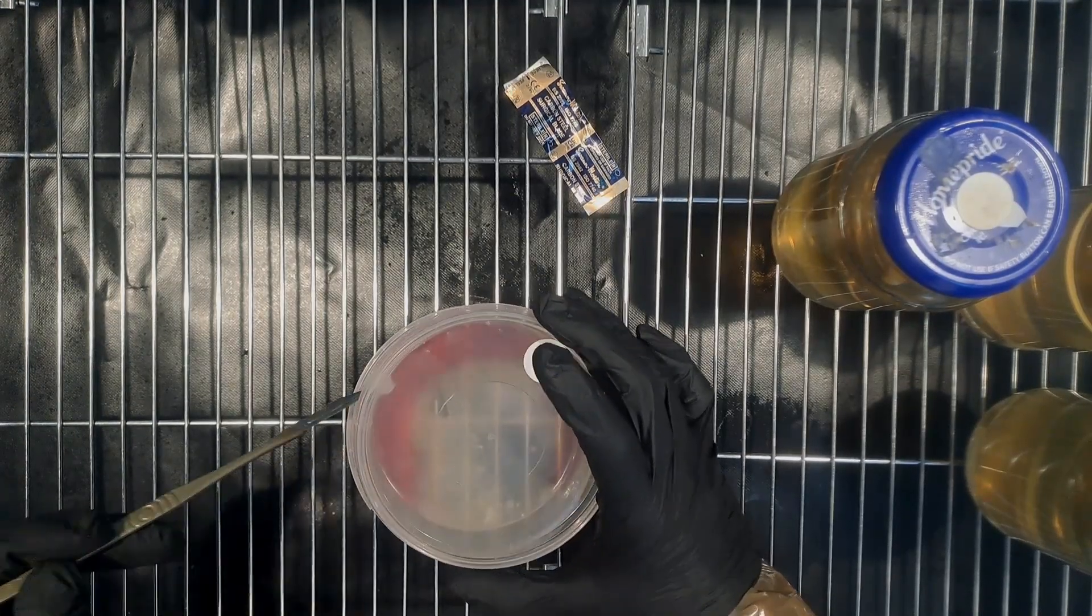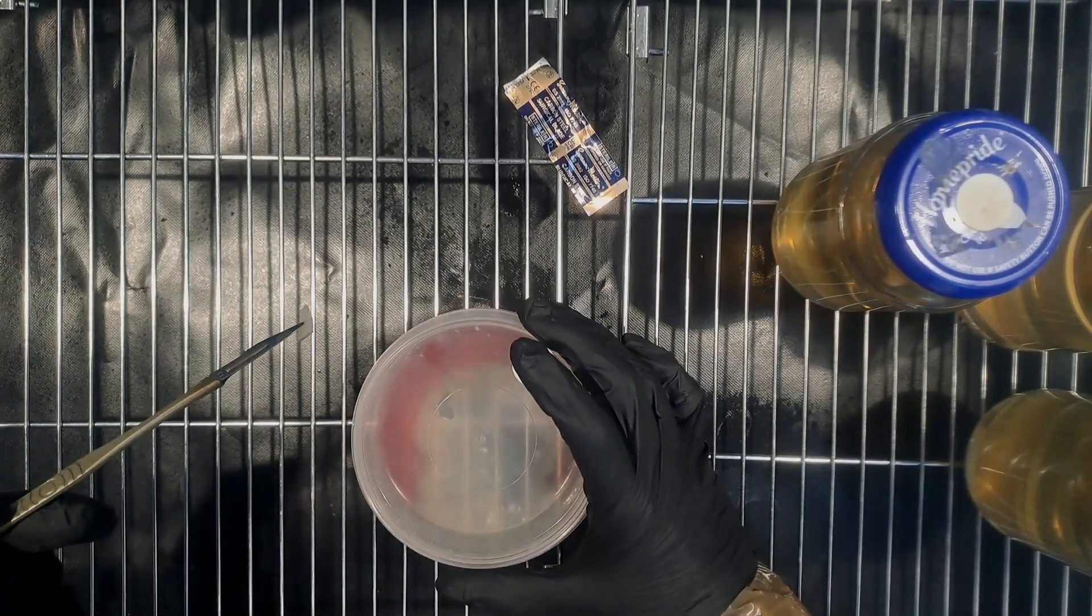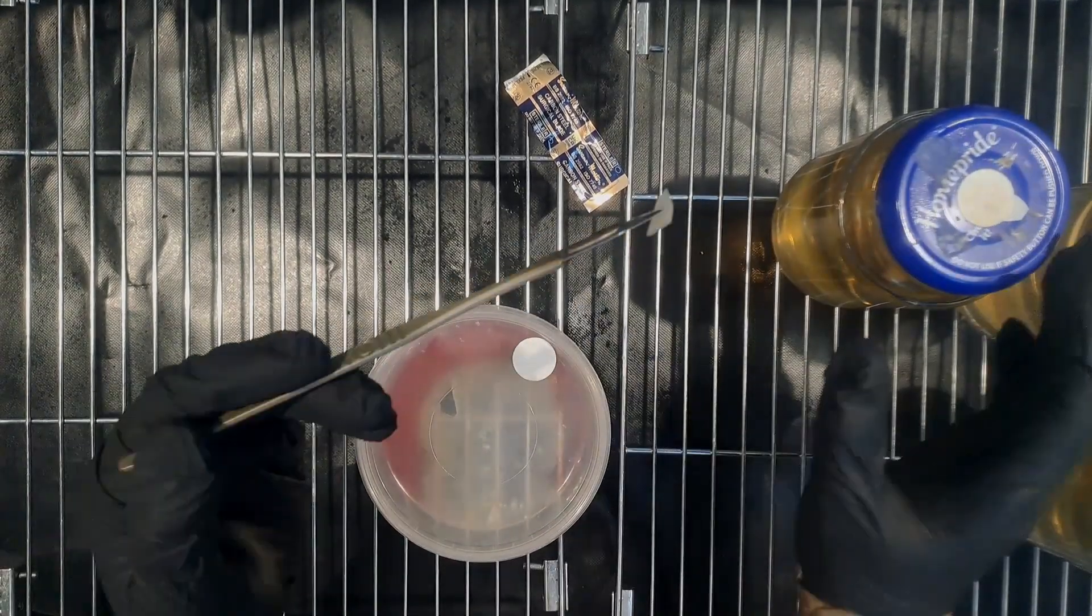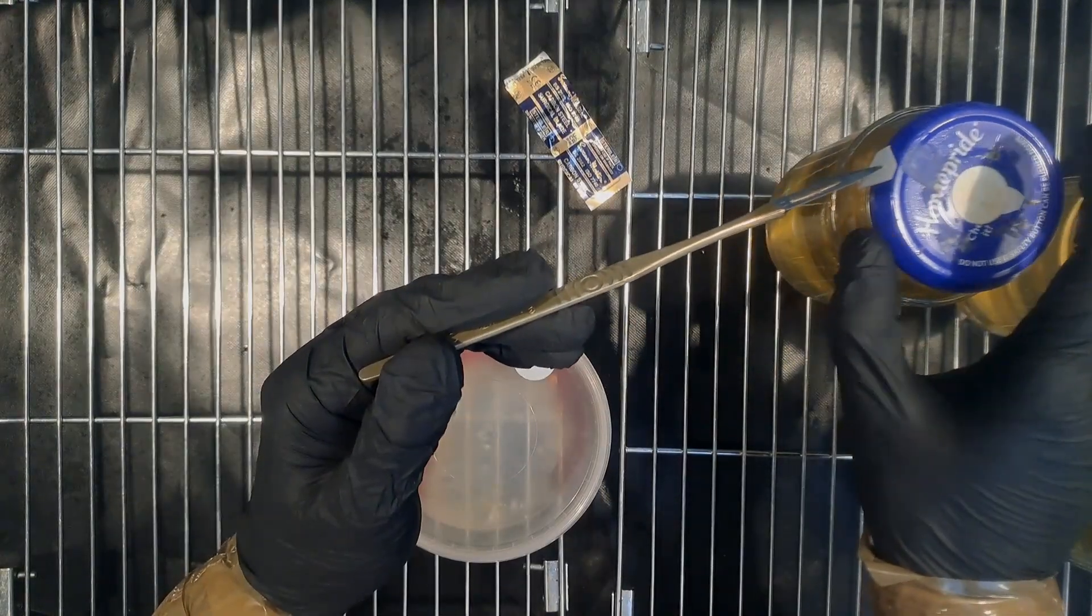I'm going to cover why I'm cutting in different areas at the end of the video. Just cut away a small amount of agar and then just knock it off into the liquid culture jar.